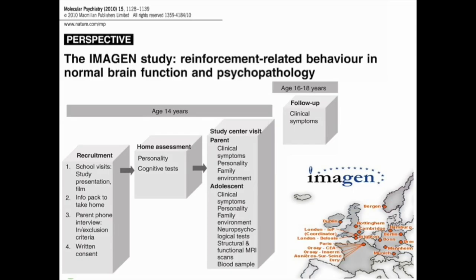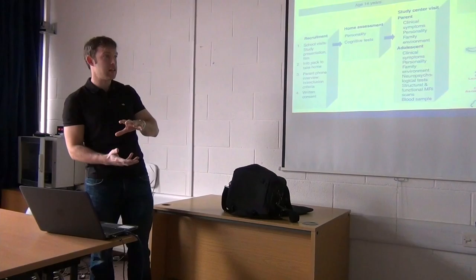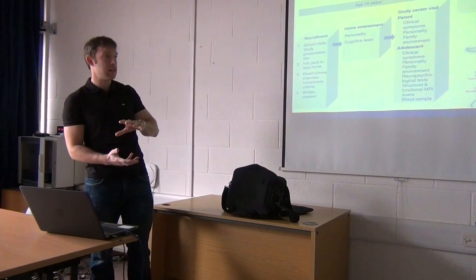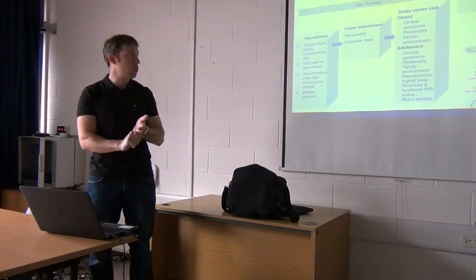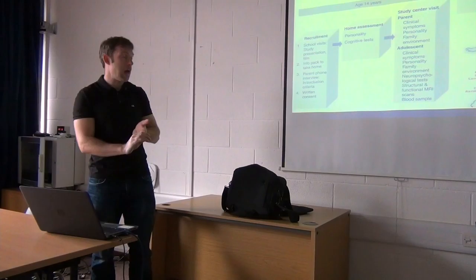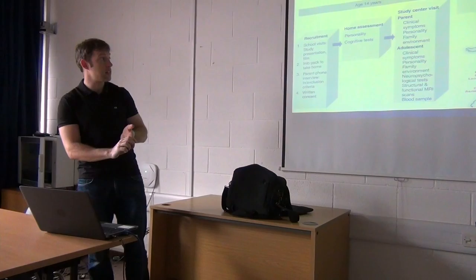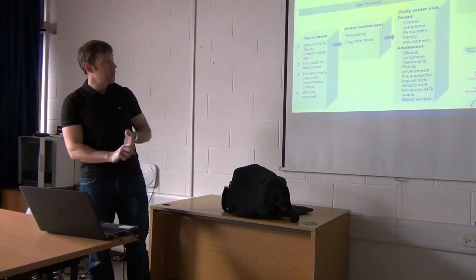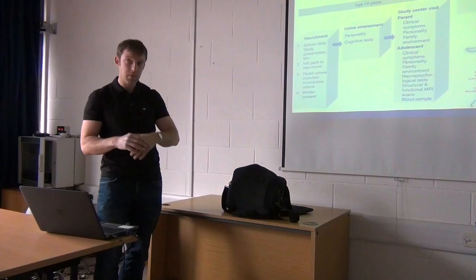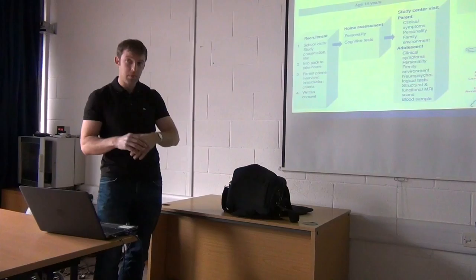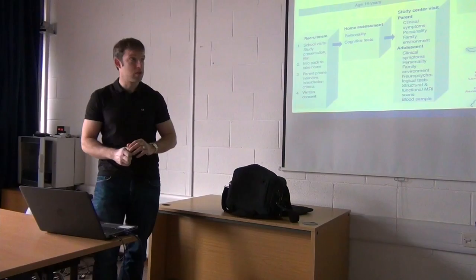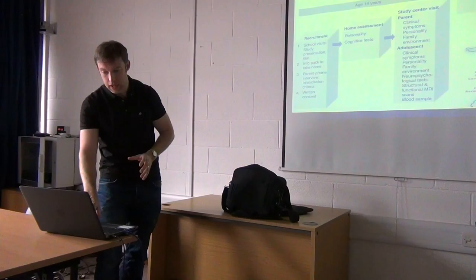The IMAGEN study is an FP6-funded project with eight sites: one in Dublin, two in the UK, one in France, and four in Germany. It recruited about 2,500 fourteen-year-olds who underwent several hours of psychometric testing — full IQ, full WISC, personality testing, blood samples, online cognitive and personality tests, two hours of scanning, a full DSM workup, and follow-up. They're actually going to be followed up until about age 23–24. We have loads of drug use questionnaires, genotyping data, and neuroimaging data.